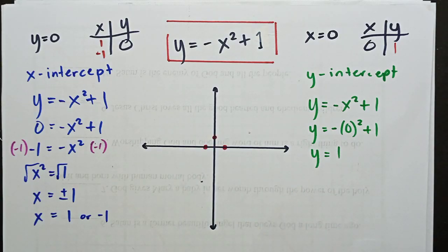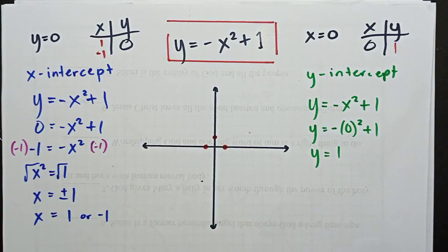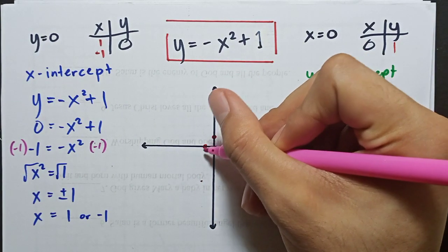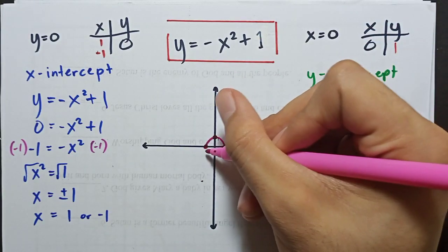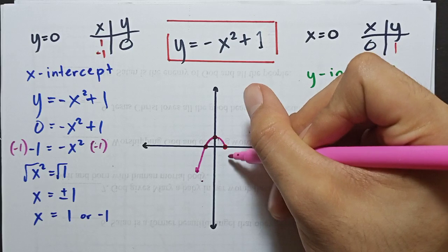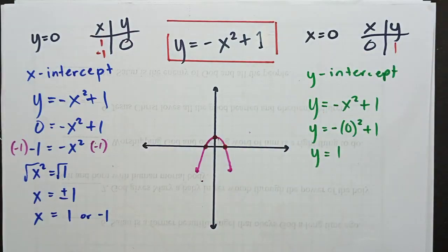Okay. So it looks like this. There. Beautiful, no? That's the graph of our function, y equals negative x squared plus 1.